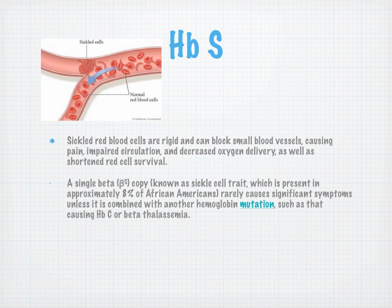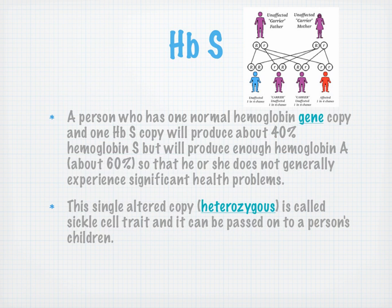With hemoglobin S, we end up with sickled red cells blocking blood vessels, causing pain and impaired circulation. You don't get enough oxygen, survival is shortened, cells are removed, and the result is hemolytic anemia. A single beta-S copy, known as sickle cell trait, is present in about 8% of African Americans, but it rarely causes significant symptoms. But when combined with another hemoglobin mutation, such as hemoglobin C or beta thalassemia, that can cause significant problems.